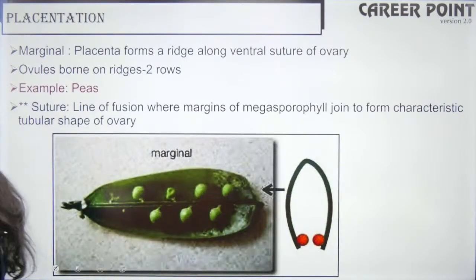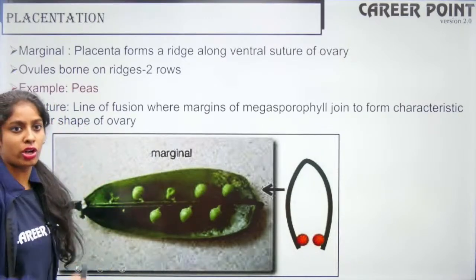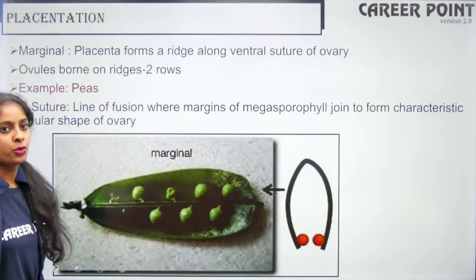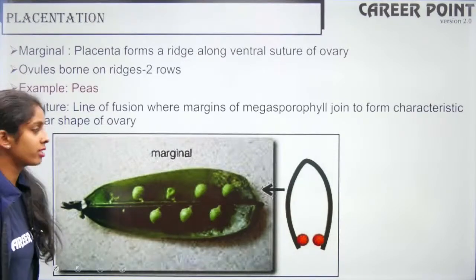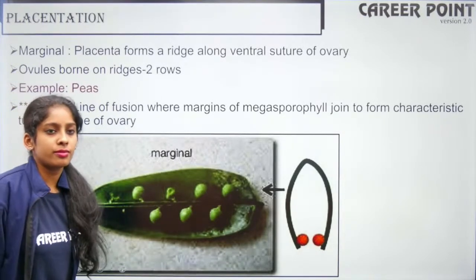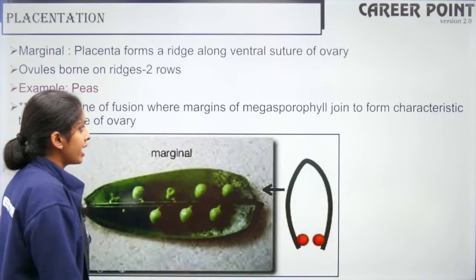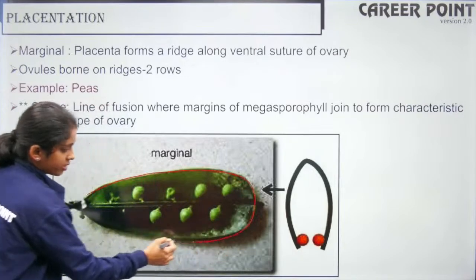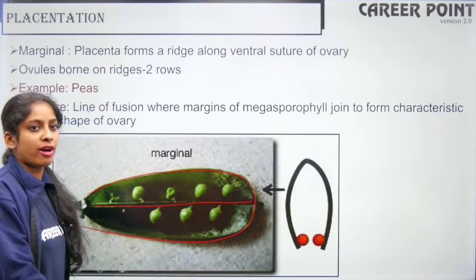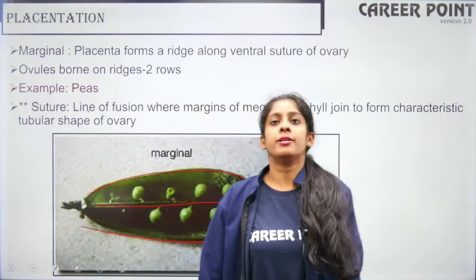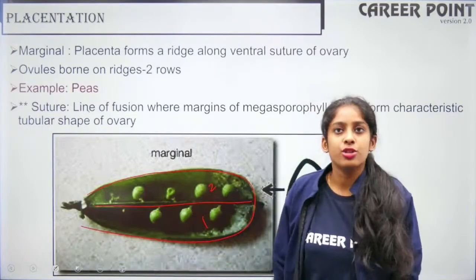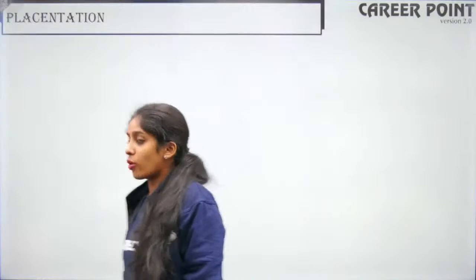Marginal placentation: the placenta forms a ridge along the ventral suture of the ovary. Ovules are borne on this ridge in two rows. Example is the pea plant.